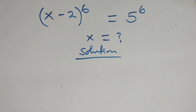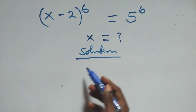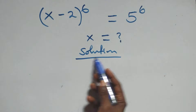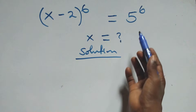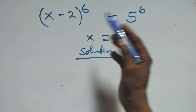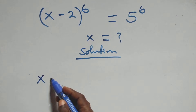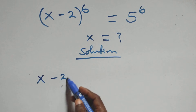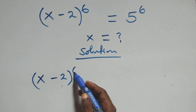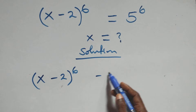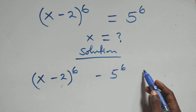Hello, you're welcome. How to solve this nice exponential equation. For the solution, we take the right-hand side to the left-hand side, and we have (x minus 2) all raised to power 6 minus 5 raised to power 6.